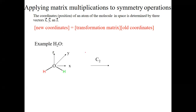Now let's assume we carry out a C₂ symmetry operation. We rotate the molecule around the z-axis by 180°. The x coordinate, which formerly pointed in one direction, will now point in the opposite direction — the length of the vector does not change, but its orientation is flipped.